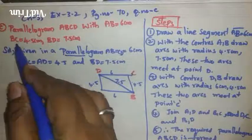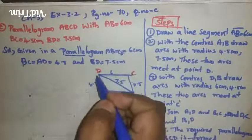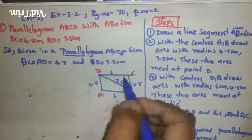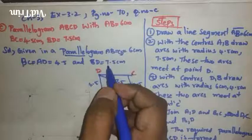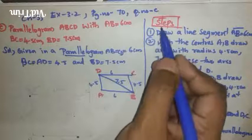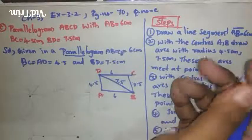Next, opposite sides: here only BC is given, BC is 4.5, and the opposite side is AD. So BC equals AD equals 4.5 centimeters. The diagonal BD is given, 7.5 centimeters. Now let us see the construction steps. Draw a line segment AB equals 6 centimeters.